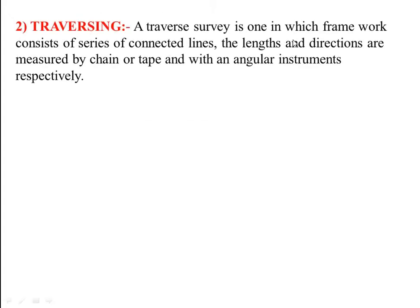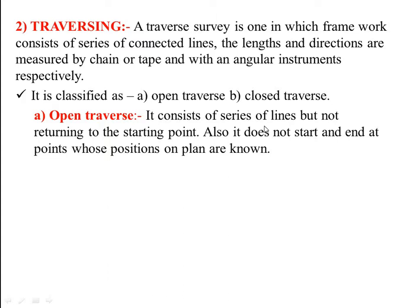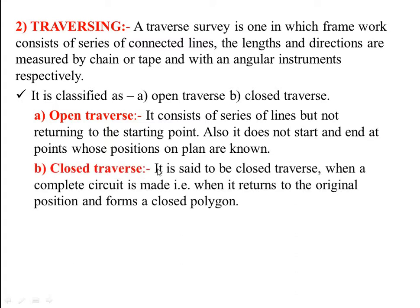Open traverse consists of a series of lines but not returning to the starting point. It does not start and end at points whose positions on plan are known. Closed traverse is when a complete circuit is made, that is when it returns to the original position and forms a closed polygon.